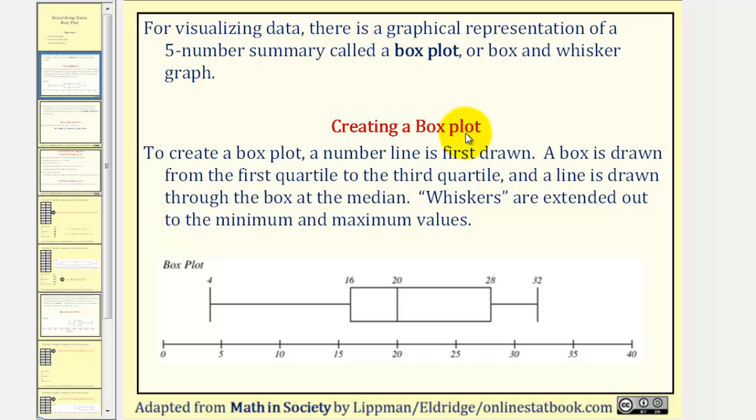To create a box plot, a number line is drawn first, which we see here below the box plot. A box is drawn from the first quartile to the third quartile, which would be this box here.